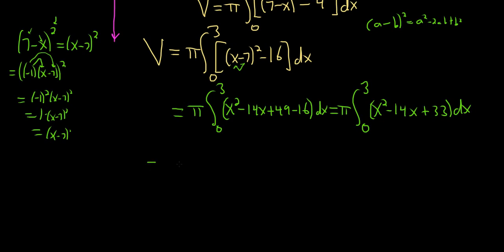So we can just use the power rule for each piece. This will be pi bracket. So integrating this one will give us x cubed over 3. Integrating this one will give us 14x squared over 2, which is just really 7x squared, right? Because you're dividing. Because you're dividing. 14 over 2 is 7.